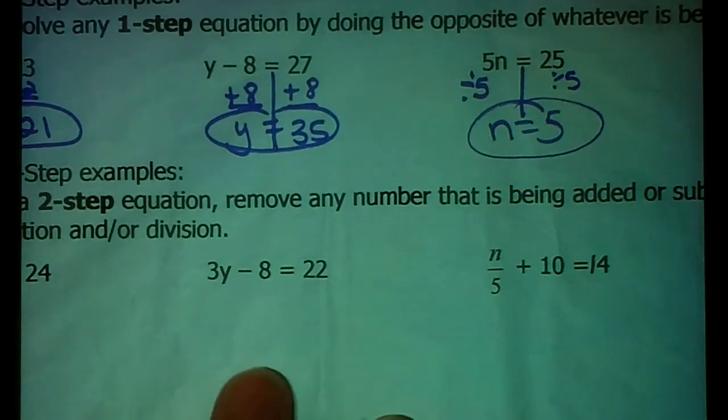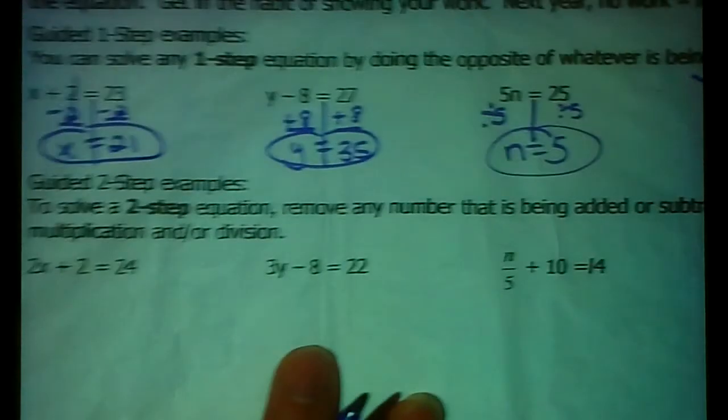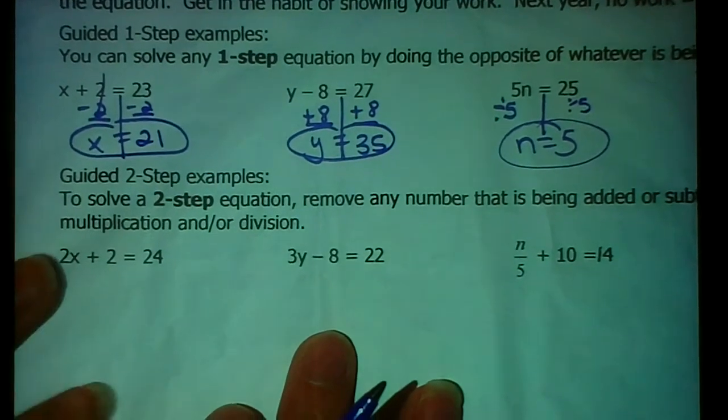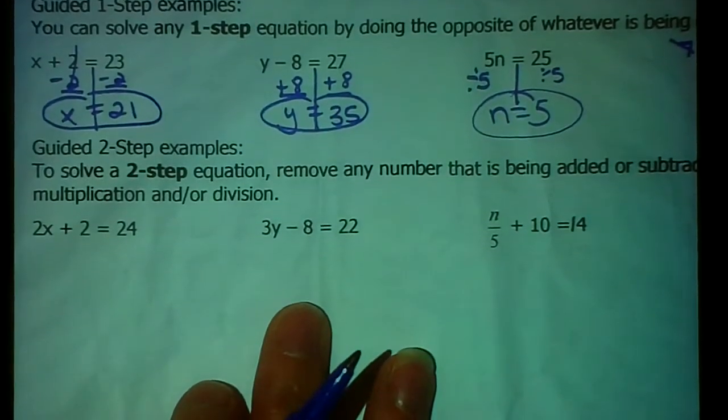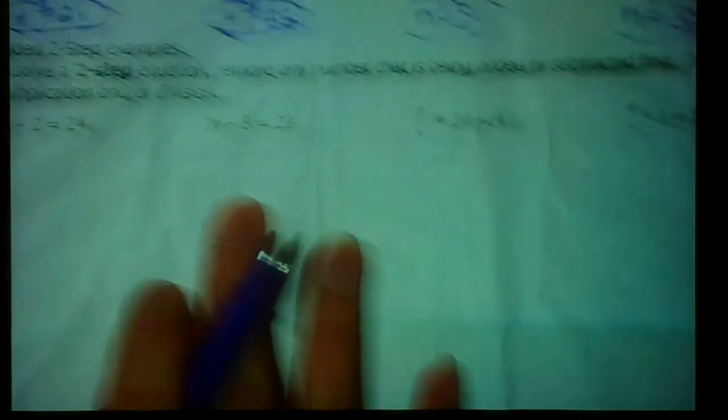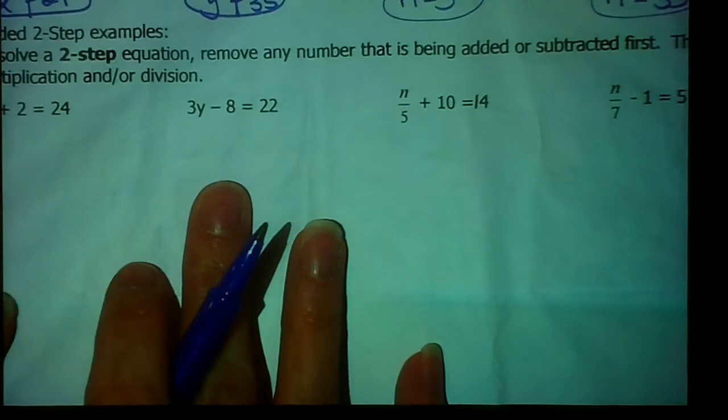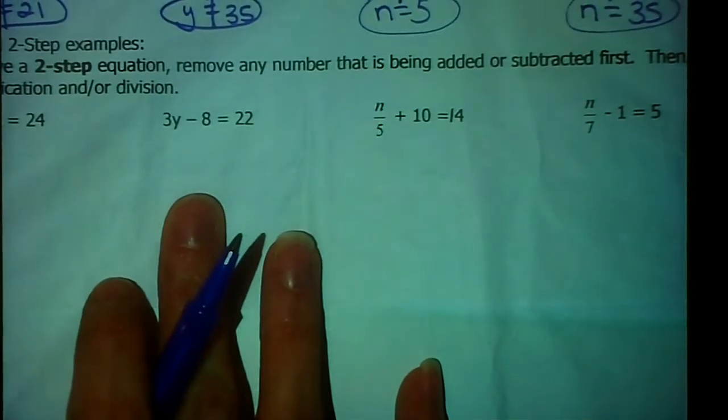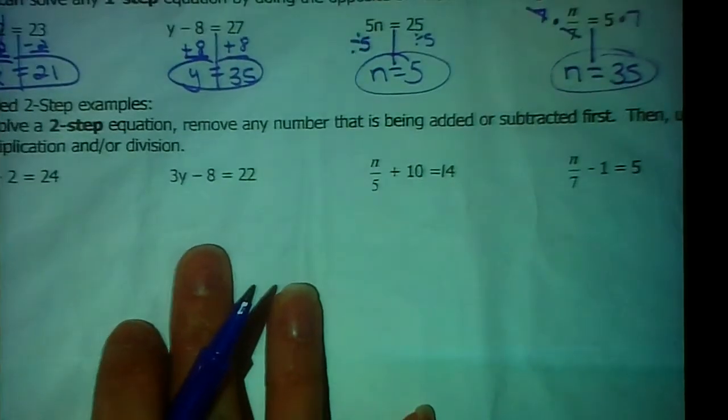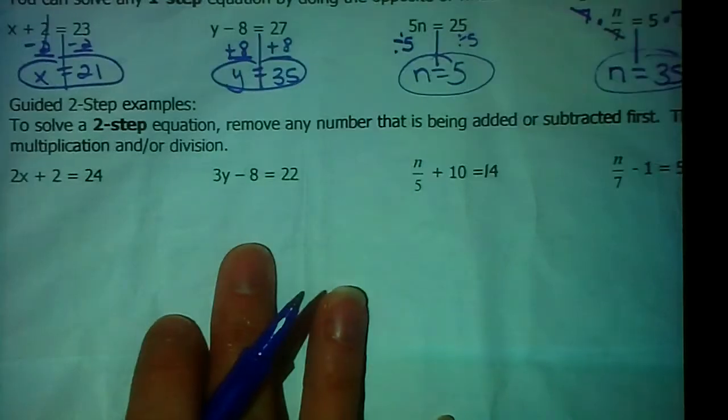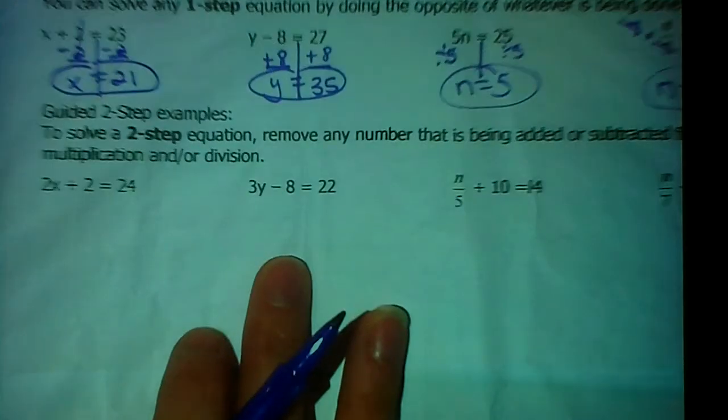Down here we have two-step equations. Like Mrs. Trombley said, it's called a two-step equation because that means two things are happening to the variable. We are going to remove any number that is being added or subtracted to the variable first, and then we're going to undo any multiplication or division.